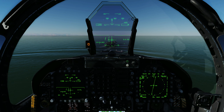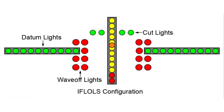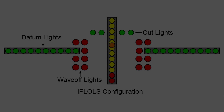At DME 0.5, altitude is 200 feet. The improved Fresnel lens optical landing system provides glide path information during the final phase of the approach. Acquisition range is 1.5 nautical miles. The ball is centred between 10 green datum lights. A high ball indicates we are above the glide slope, while a low ball indicates we are below the glide slope.